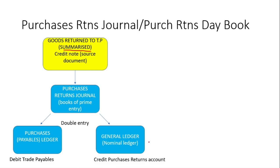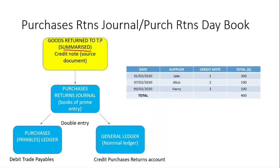Looking at this as a table from the Purchases Returns Journal, we're going to have a date, suppliers' details, and this time we're going to have the credit notes. The total you see here will be put into our two ledgers.